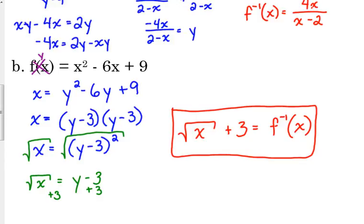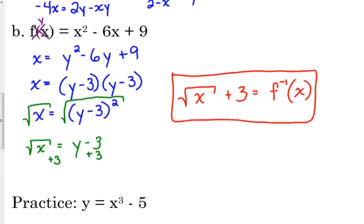So, the inverse of a quadratic is a square root. Makes sense. Because to undo squaring something, you take the square root. That's the relationship between the inverses, is how do you undo it.